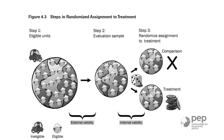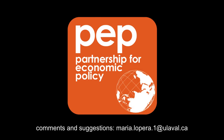Provided that there are no ethical issues with randomized experiments, it should always be your first choice for evaluating a program. Speaking about ethical issues, I would like to highlight that when we randomly assign participants to a program, every candidate has the same probability of participating. Therefore, randomizing is a fair decision rule.